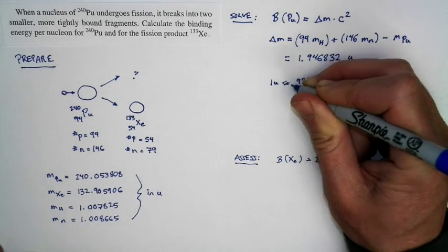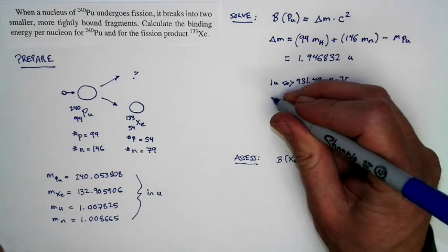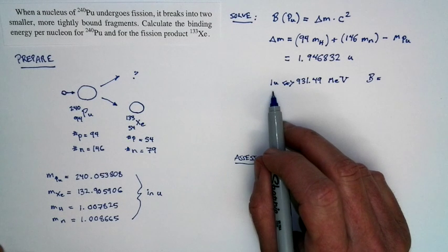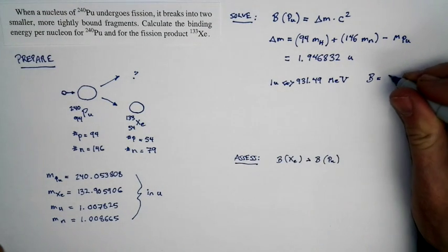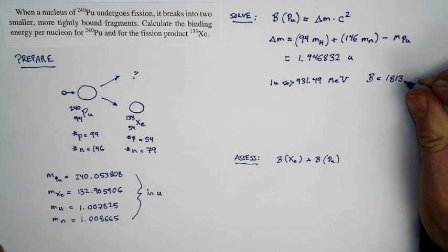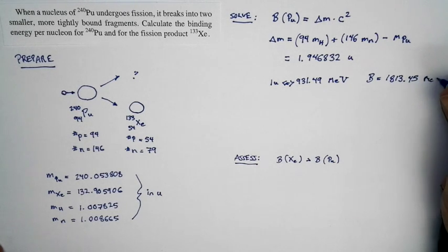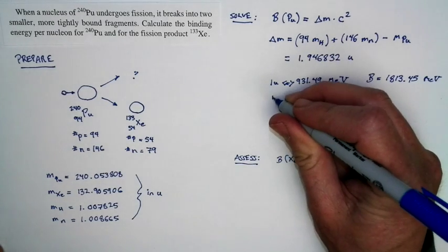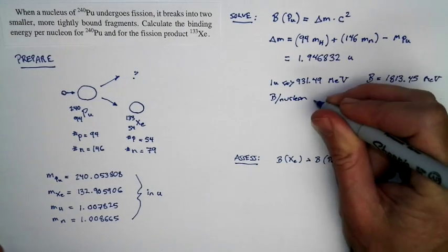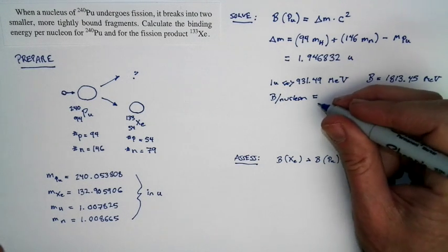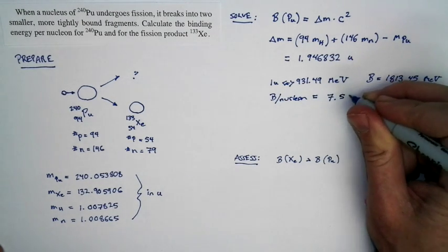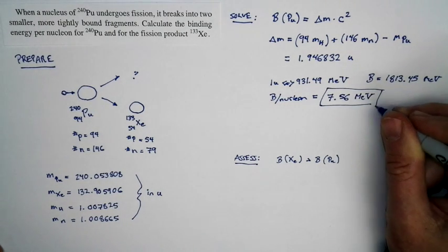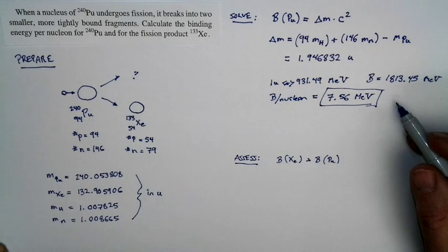There's a correspondence between those. So we can take the binding energy. We have the difference in atomic mass units. 1 atomic mass unit difference corresponds to this difference in energy. So we can compute the binding energy. And it's 1,813.45 MegaElectron Volts. But we weren't asked to find a binding energy. We were asked to find the binding energy per nucleon. And it's plutonium-240. So the binding energy per nucleon is equal to this number divided by 240. And if I work that out, I get 7.56 MegaElectron Volts. Now, we've been keeping lots of extra significant figures around because we're taking differences between numbers that are very close to each other. But we're at a point where we can round off comfortably.